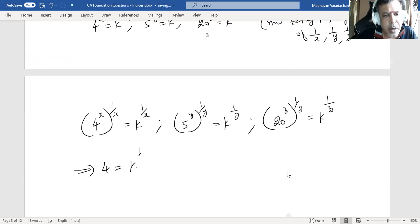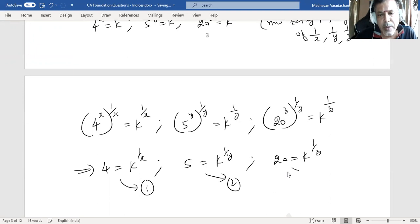By doing that we land up with 4 equal to k power 1 by x, then 5 equal to k power 1 by y, and then 20 equal to k power 1 by z. Let us call this equation 1, this as equation 2, and this as equation 3.